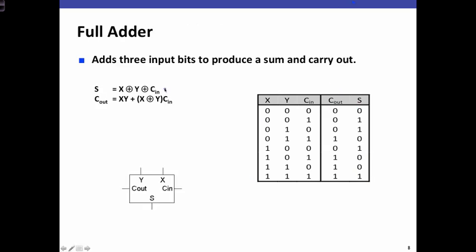Here's our expression for the sum, which is just the XOR of X with Y and with CN. The COUT expression is a little more complicated. COUT is 1 whenever X and Y are 1, or when CN is 1 and exactly 1 of X or Y is 1. So either X is 1 and Y is 0 with CN is 1, or Y is 1 and X is 0 when CN is 1. So those are the four cases where COUT is 1, and this expression handles COUT.